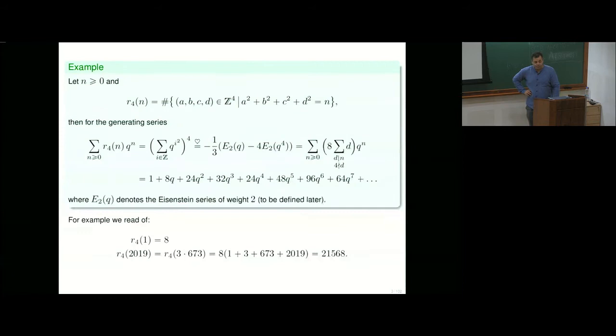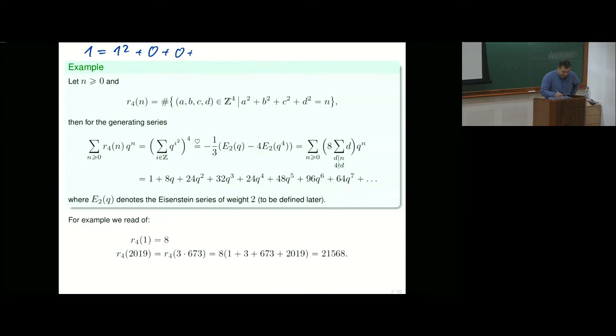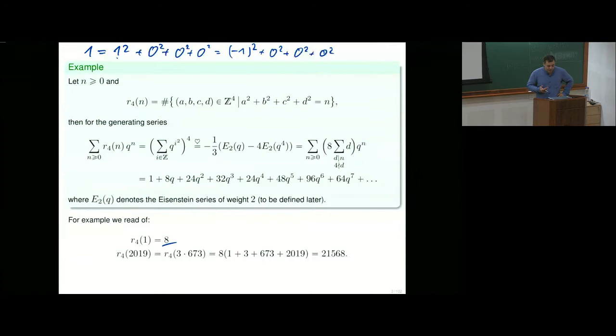You ask in how many ways you can write a number as a sum of four squares. Starting with one: it could be written as 1² + 0 + 0 + 0², or as (-1)² + 0² + 0² + 0². And now we can move the one around. All together we get eight ways to write the number one as a sum of four squares.